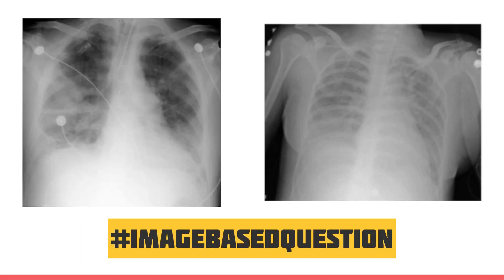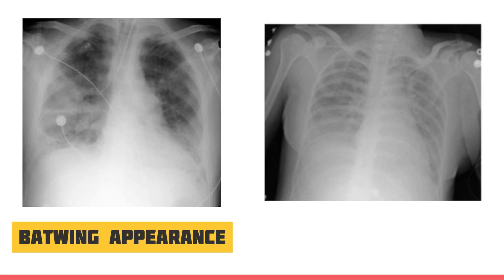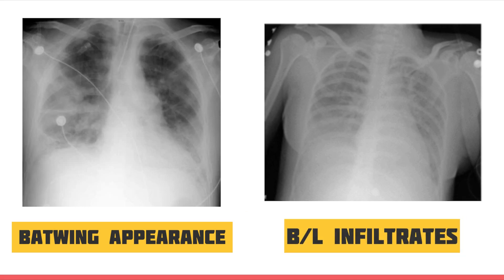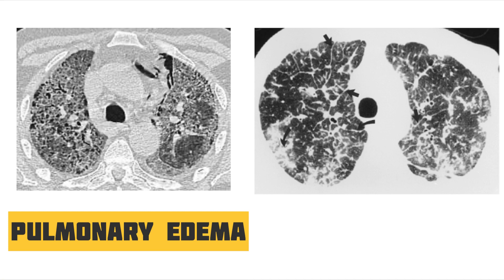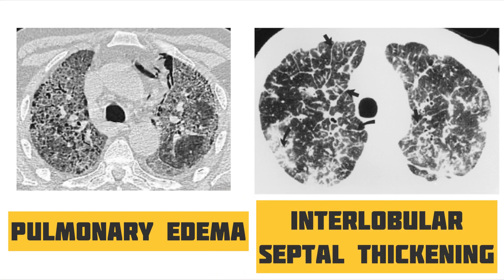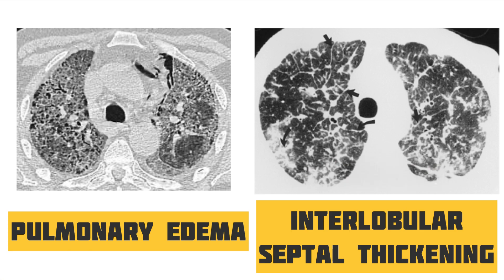Imaging-based questions may appear in the exam. On chest X-ray, the batwing appearance is characteristic of pulmonary edema, and total white-out of the lung is a feature of ARDS. On CT scan, pulmonary edema and interlobular septal thickening — the Kerley B lines, which are perpendicular to the pleura — are potential findings that could be given as image-based questions.